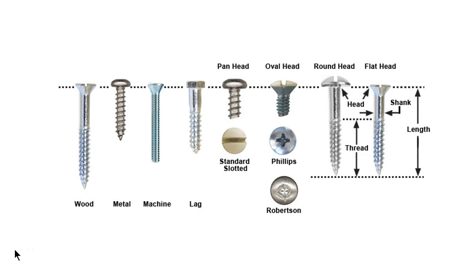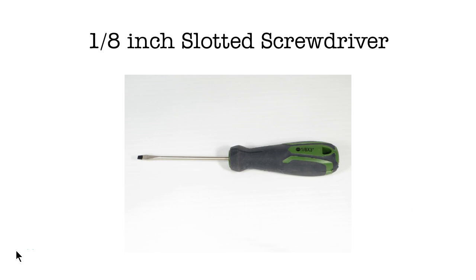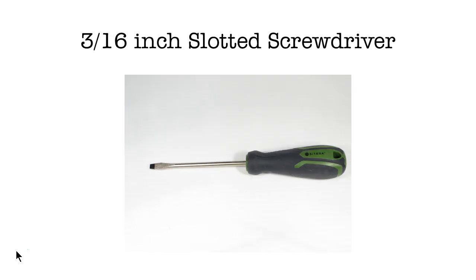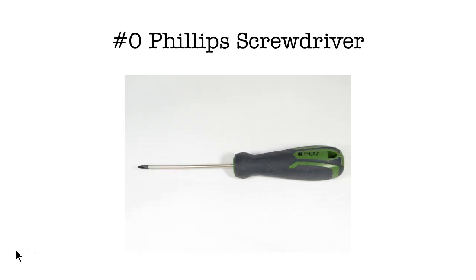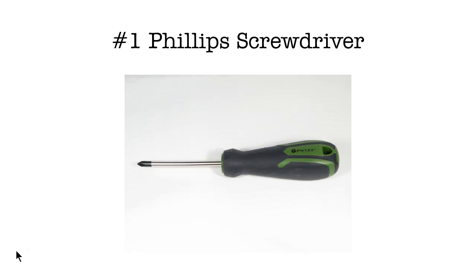It is the head and its size that determines what tools we need. You will need 4 screwdrivers: a 1 and 1/8th inch or 3 mm slotted screwdriver, a 3/16th inch or 5 mm slotted screwdriver, a number 0 Phillips screwdriver, and a number 1 Phillips screwdriver. There is no metric value for numbered Phillips heads.